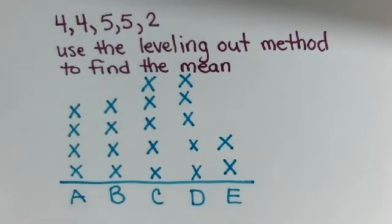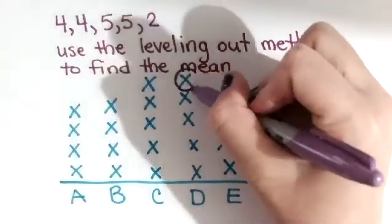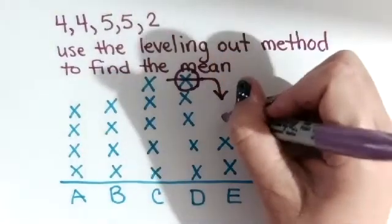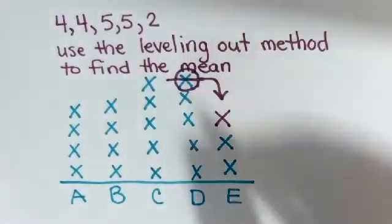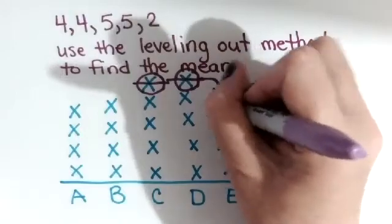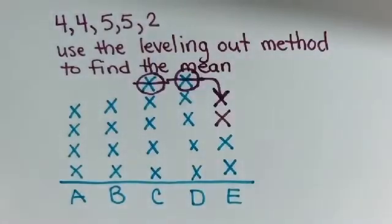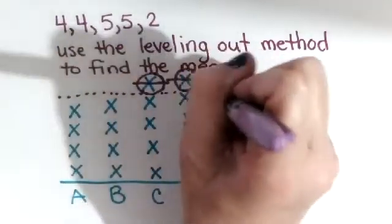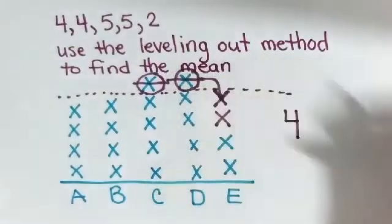Now, what the leveling out method is, is everyone getting their fair share. So if we were going to make it so that all students in class have the same number of pencils, then we would have student D take one and give it to E. And we would also have student C take one and give it to E so that now everyone has four pencils.